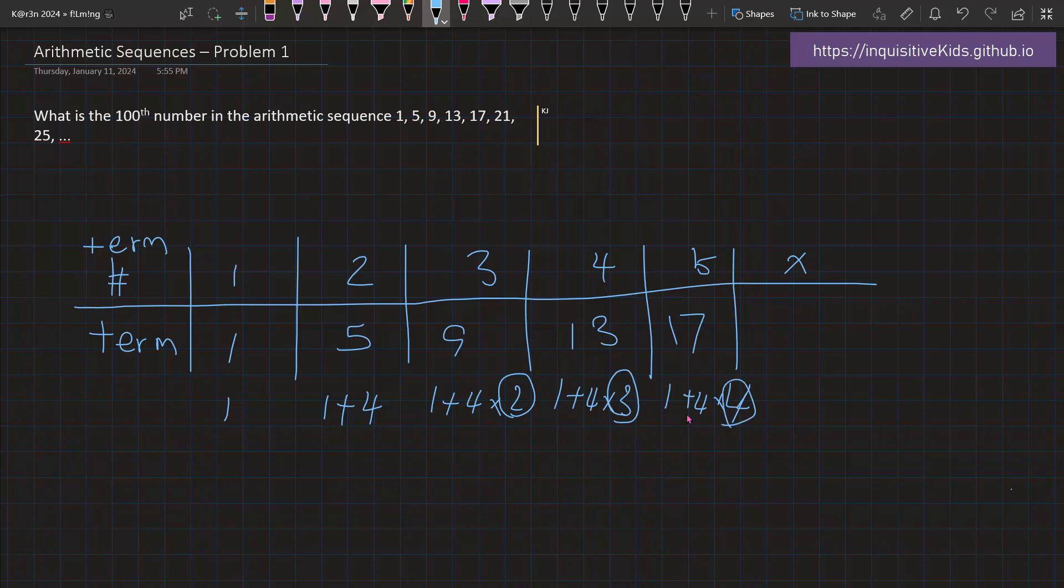So this number here is what's constantly changing for every single expression. So since this is the number in the expression that is changing, what relationship does it have with the other variable here?